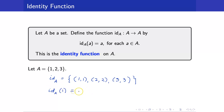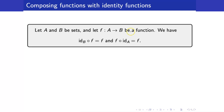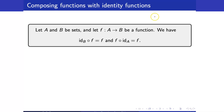We can also write this as: the image of 1 is 1, the image of 2 is 2, and the image of 3 is 3. Now, what happens when we compose functions with identity functions? Here is a theorem: when we compose f with the identity function on set B, you get the same function f. When you compose the identity function on A with f, you also get the same function f — that is the reason why it's called the identity function.